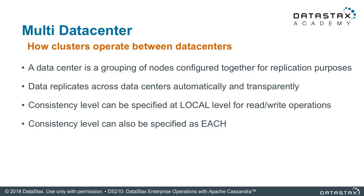How those clusters operate between data centers is really interesting, because a data center is that group of nodes denoted in some sort of topology, and it prescribes a certain replication to it. When you create a keyspace and use a network topology strategy, you can assign the replication value per data center, so that topology is aware throughout the keyspace. Remember, it is only stored in the keyspace, not the tables.